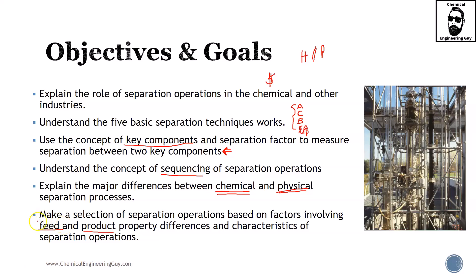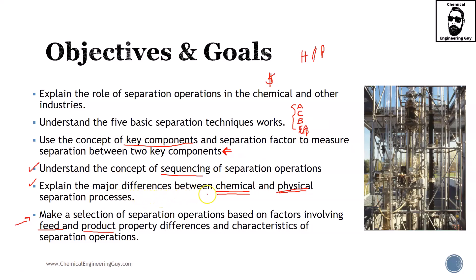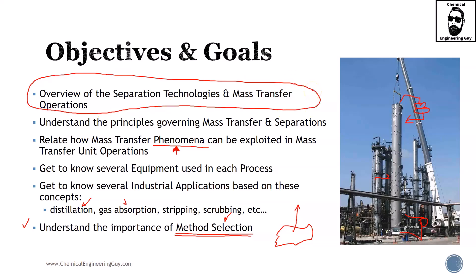This last objective is essentially a summary of the three preceding ones. If you are done with this, make no worries if you don't fully master the course, because this is just an introduction. The overall idea is to give you an overview of separation technologies and mass transfer operations. Later on, you'll have specialized courses on distillation, absorption, liquid-liquid extraction, drying, dehydration, and so on.